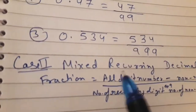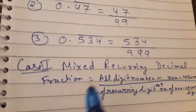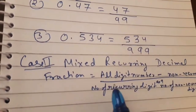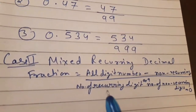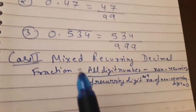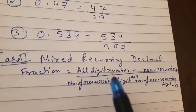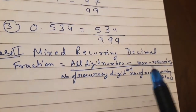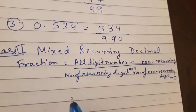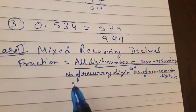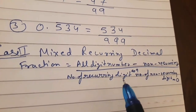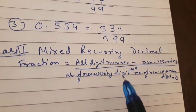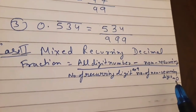What is the case for mixed recurring decimal, and how can we convert this type into a fraction? The rule is: numerator equals all digit number minus non-recurring digit. For the denominator, write nine for each recurring digit, and write zero for each non-recurring digit.